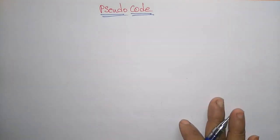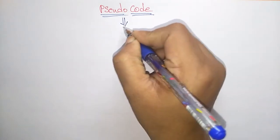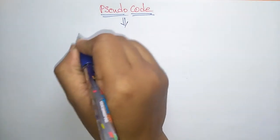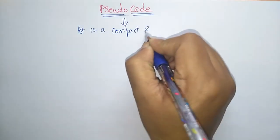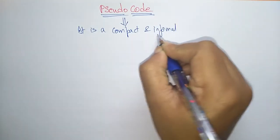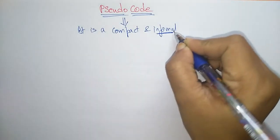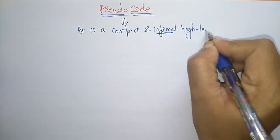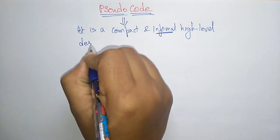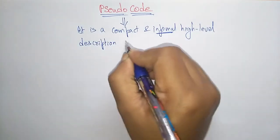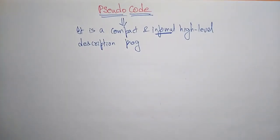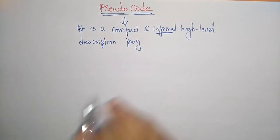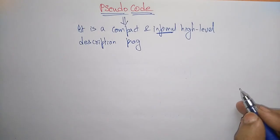Now let us see what is pseudocode. Pseudocode is a compact and informal high level description of a program. It is just describing the program before entering your program. If you write your program in the form of a pseudocode, then you will understand what are the steps that you have to take while writing the program.